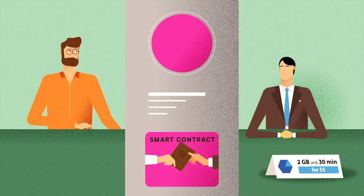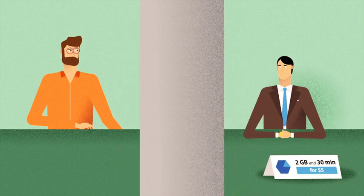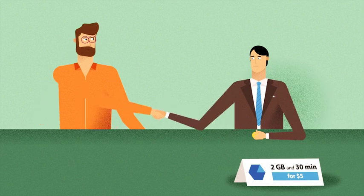After the client has selected the operator on the blockchain platform, a smart contract is created. It guarantees all transactions and the authenticity of the user's identity on the cellular network.